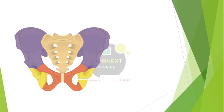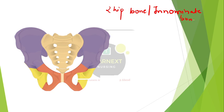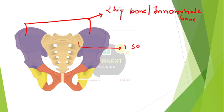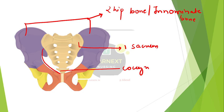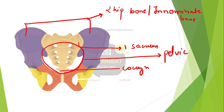First we will see the parts of the pelvis. The pelvis is made of two hip bones, which we call the innominate bone. Then the second is one sacrum and coccyx. So mainly the pelvic bone is made of two innominate bones, one sacrum, and one coccyx. This complete part which I have circled is called the pelvic brim.